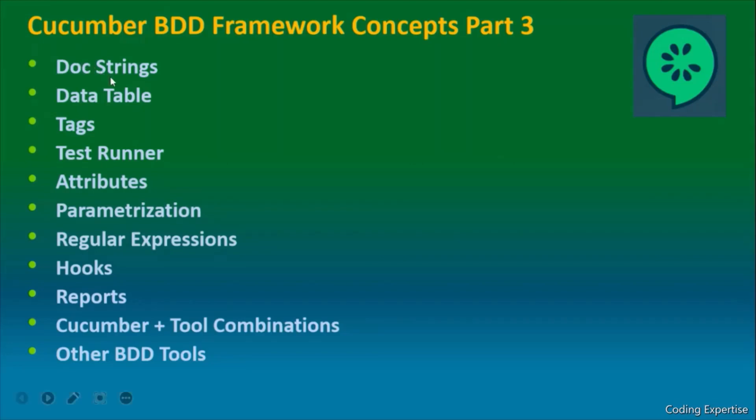Let's understand first why do we prefer doc strings, in what ways data table and tags help us in automation. Let's understand the importance of test runner and attributes that play a vital role. Don't worry, we are going to discuss them in detail.